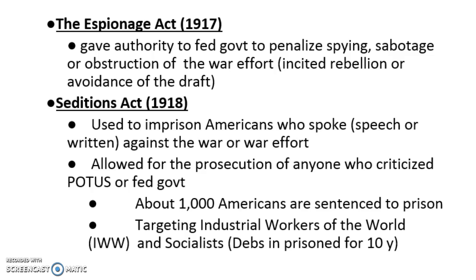One of the more important responses by the federal government during World War I was to restrict freedom of speech in order to protect the patriotic sense of the war effort, and they passed the Espionage and Sedition Acts. This allowed the federal government to fine, imprison, and severely limit freedom of speech for those who obstructed the war effort or avoided the draft. They tended to target groups and organizations like the Industrial Workers of the World — the Wobblies — and Socialists, who were vehemently anti-war.